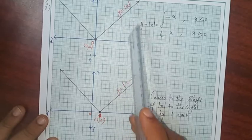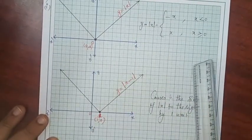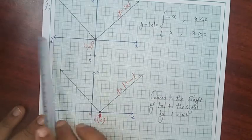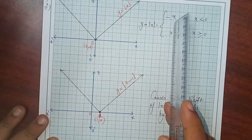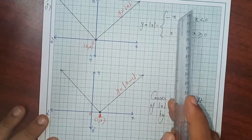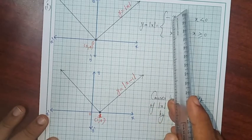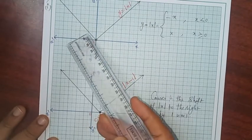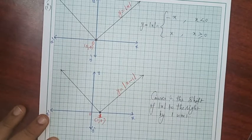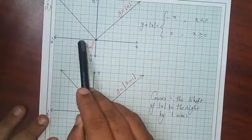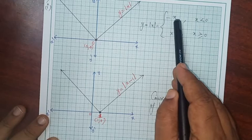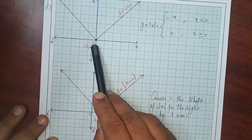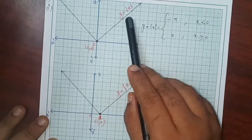Substitute x = 2: y = 2, giving (2, 2). Similarly (3, 3), (4, 4), and so on. On the left side, take x = -1: it falls in the x < 0 region, so y = minus of minus 1 = 1, giving point (-1, 1). Take x = -2: y = 2, giving (-2, 2). Similarly (-3, 3), (-4, 4). Join everything — this is the curve y = |x|.